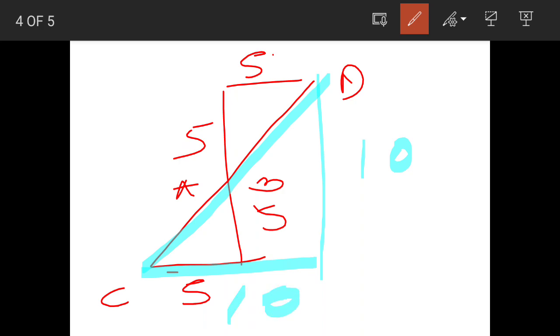This hypotenuse will be equal to 10 squared and 10 squared. 10 squared and 10 squared is equal to 200, and under root of 200.